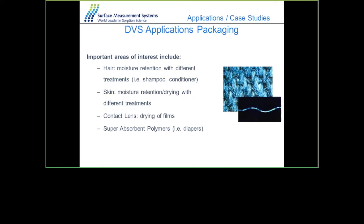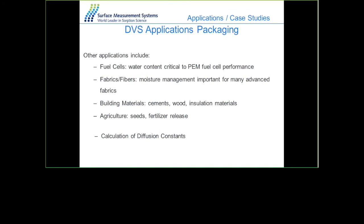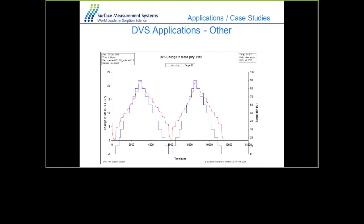For packaging materials, electronic components, blister packs, and listed packaging materials can be placed in the sample chamber as they come, and the diffusion and permeability of vapor through the packaging can be measured. Other applications include fuel cells and proton exchange membranes, fabrics and fibers, the interaction between fragrances and fabrics, washing powders, building materials such as cements, wood and insulation, agriculture including pesticides, seeds and fertilizer release — all with applications in DVS.